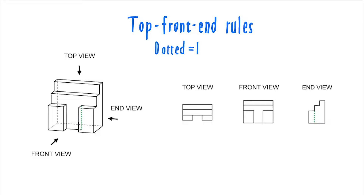Dotted lines are used to depict edges that are not seen from a specific view. So this inner edge on the object is obscured when we're seeing the object from the end view because it's tucked behind. But its position still needs to be noted, so a dotted line is used. I like to imagine the objects as being made of frosted glass, so the dotted lines represent any edges that would appear foggy to you looking through that frosted glass.